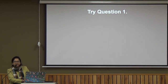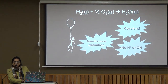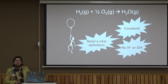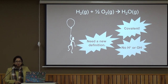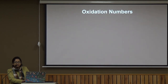Now observe this equation: hydrogen plus oxygen converted into H₂O. The oxidation state of hydrogen was 0 in H₂ and becomes plus 1 in H₂O — so hydrogen is oxidized. Similarly, oxygen was at 0 and converts to minus 2 in H₂O — so oxygen is reduced. We can observe both the oxidation and reduction happening here.